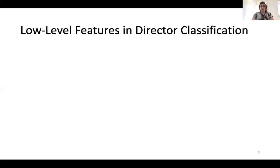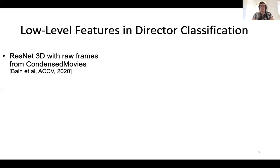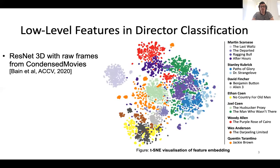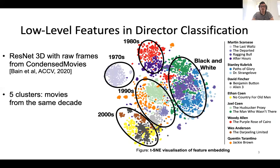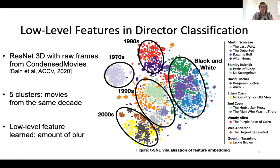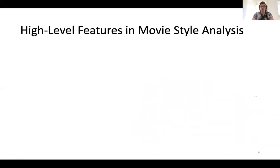To illustrate the inefficiency of low-level features, we tackled a director classification task using a 3D ResNet with raw frames from a subset of the Condensed Movies dataset. We can see the resulting TSN visualization of the learned representation, which shows five natural clusters — each composed of movies in black and white or from the same decade. We believe the network learns low-level visual features such as the amount of blur, which highly characterizes the technical evolution of cameras over the decades. Therefore, we think that high-level features are needed for movie style analysis.